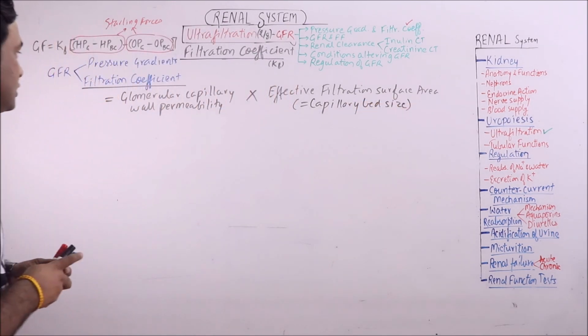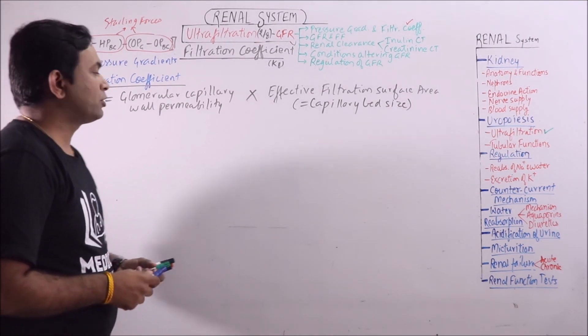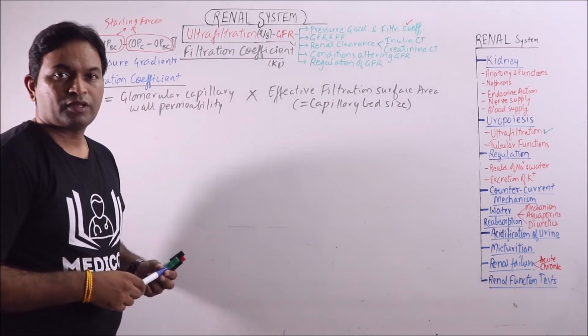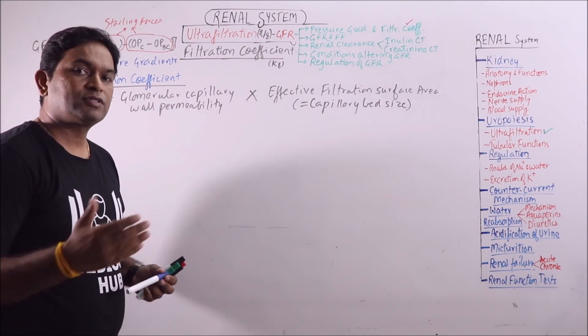So first one is glomerular capillary wall permeability. We know that the glomerular capillaries are highly permeable. In comparison to the capillaries of skeletal muscles, these are 50 times more permeable.